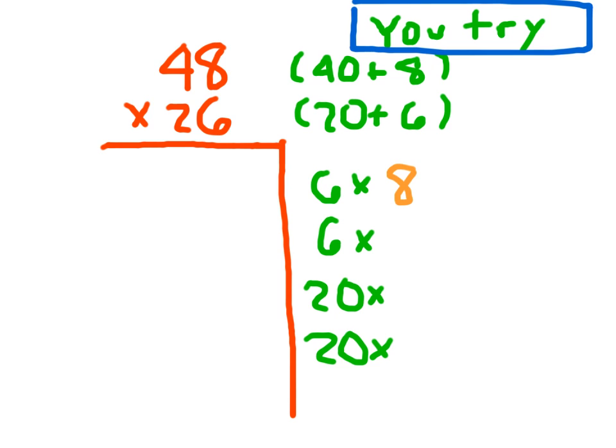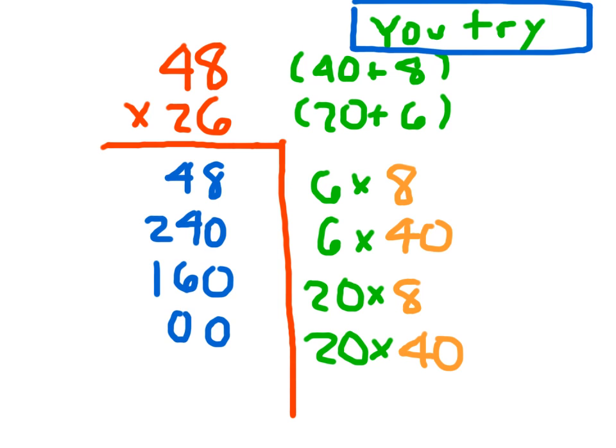Alright, first thing is 6 times 8, next thing is 6 times 40, and then we've got 20 times the 8, and then 20 times the 40. Next step is to actually solve these partial products. 6 times 8 is 48, 6 times 40 is 240, 20 times 8 is 160, and 20 times 40, don't get confused by that last one there, is 800. Check your partial products. Did you get 48, 240, 160, 800? Now here's the real test, did you add them together correctly? Our product of 48 times 26 is 1,248.